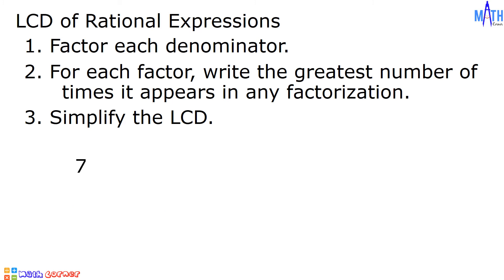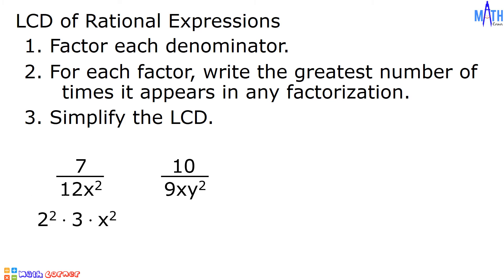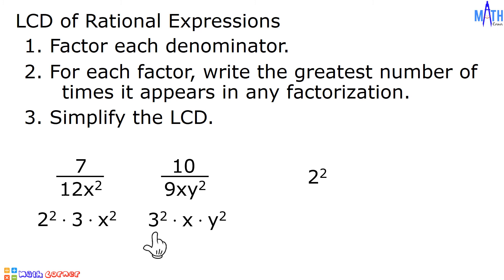Example number 3. We have 7 over 12x squared and 10 over 9xy squared. 12x squared is equal to 2 squared times 3 times x squared. While 9xy squared is equal to 3 squared times x times y squared. The greatest number of times 2 appears is twice. The greatest number of times 3 appears is twice.